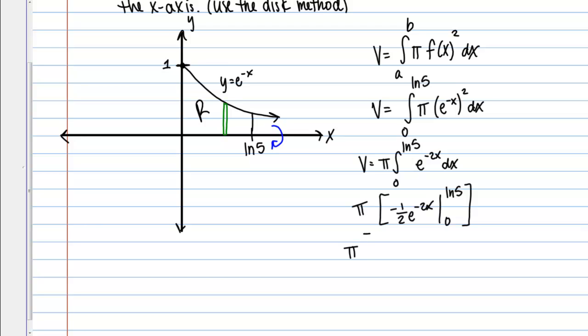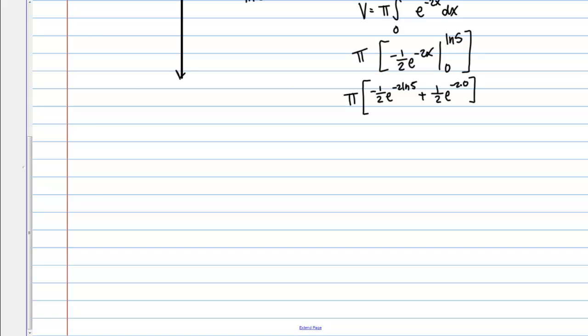So that gives me pi times, I'm going to plug in natural log of 5. So negative 1 half E to the negative 2 ln 5. Minus a negative, so plus 1 half E to the negative 2 times 0. So in this first term here, I can rewrite this as E to the natural log of 5 to the negative 2 power. If I use the properties of natural logs. And then plus 1 half E to the 0.